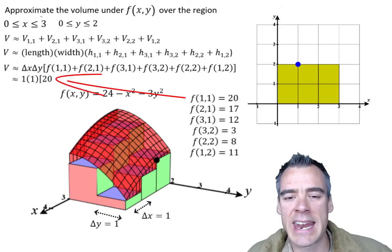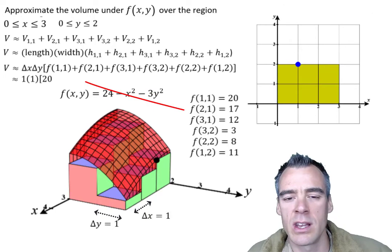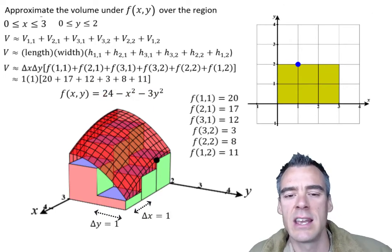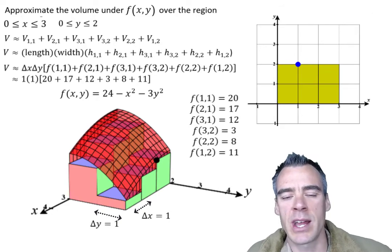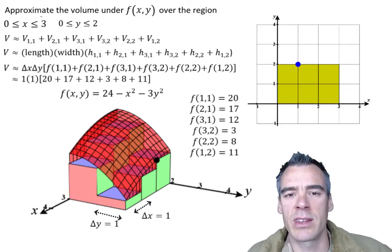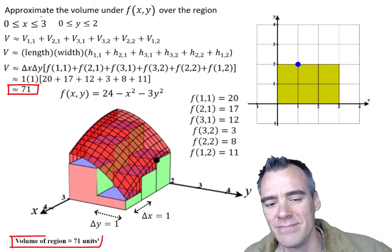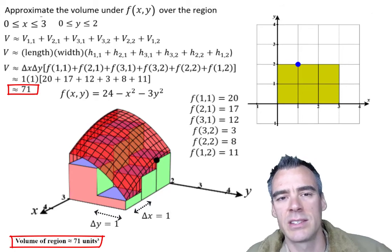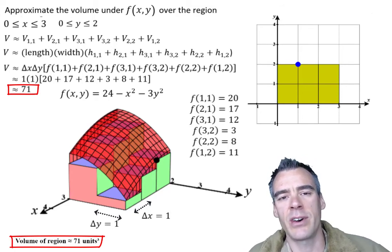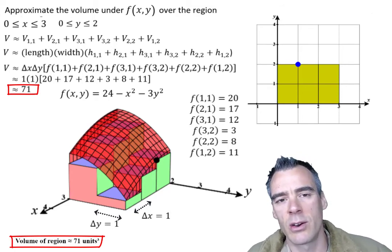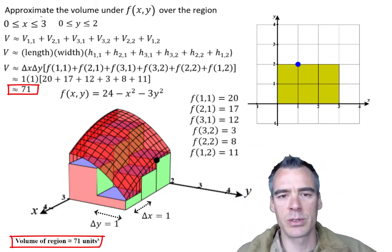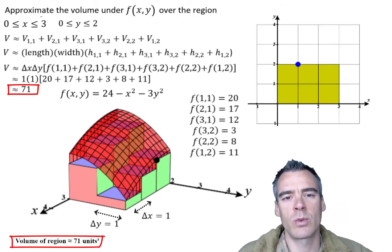Our function evaluated at x equals 2 and y equals 1 was 17 and et cetera. We just go ahead and plug all those in. We add up those heights. We multiply it by the width and length and we end up with approximately 71, which Calcplot conveniently shows us down here. So that's it, that's our Riemann sum to get an estimate of the volume under the surface over this particular region. And I guess it's in the ballpark, but suppose we wanted to get a better approximation, what could we do?